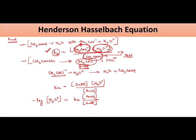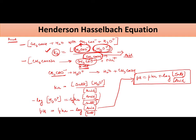If you take negative log on both sides, negative log over here and negative log over here, this will be your pH will be equal to pKa minus negative log of acid over salt. And if you rewrite it, it will be equal to pH equal to pKa plus log of salt upon acid. This is the Henderson-Hasselbalch equation for acid.